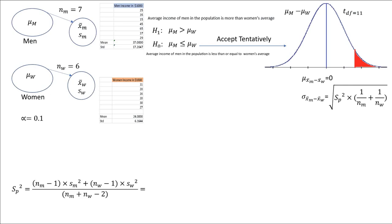Now, to calculate the weighted average of the variances — which is sp squared — we think: how many people are in the first sample? Seven. And we know their mean, which is 37. Therefore, we lose one degree of freedom, and the variance of the first sample from men is 17.2047 squared.